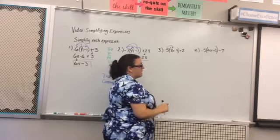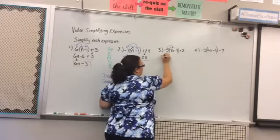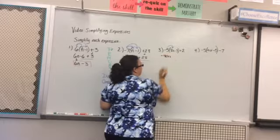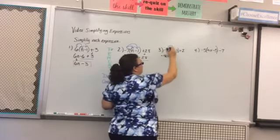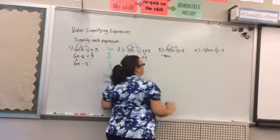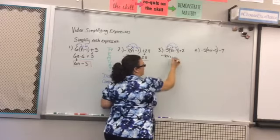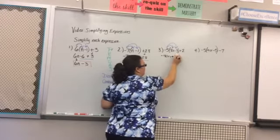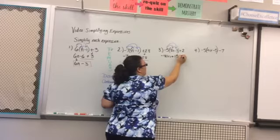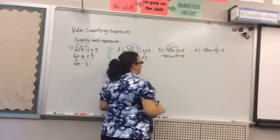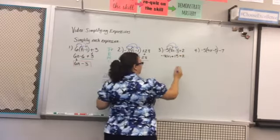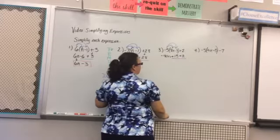Negative five times eight is negative 40 and then I have an n so it's going to be negative 40n. Then I'm going to do negative five times negative three. Negative times a negative is a positive. Five times three is 15 so plus 15 and then I have a plus two. So I've distributed to get rid of my parentheses. Now I'm going to combine these like terms.